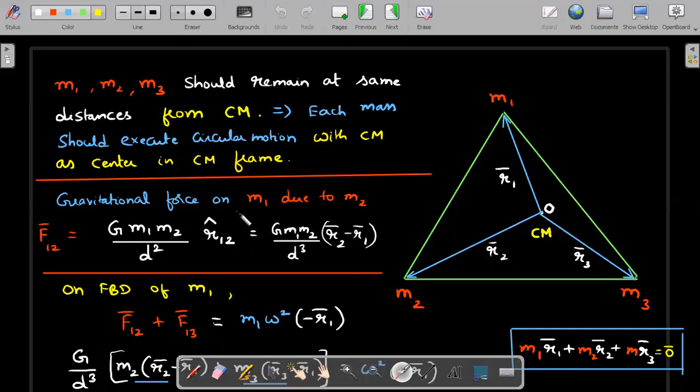So the gravitational force on M1 due to M2, I'll label it as F12, force on one due to two, is equal to GM1 M2 by R square. Distance square distance is this one, which is given as D in the problem. And I'm writing a unit vector in the direction directed from one to two.